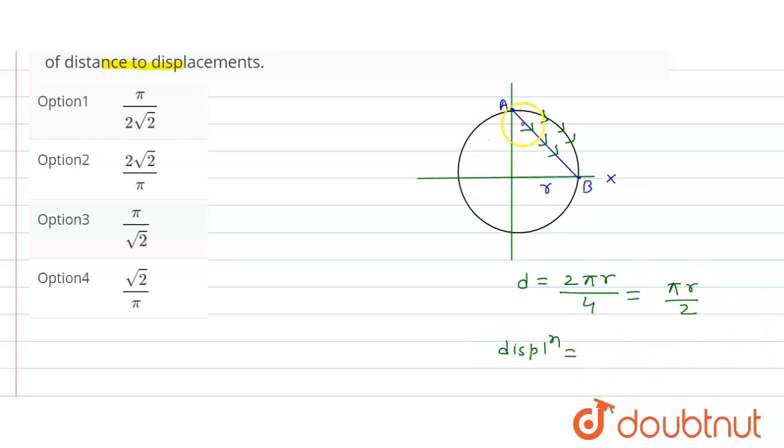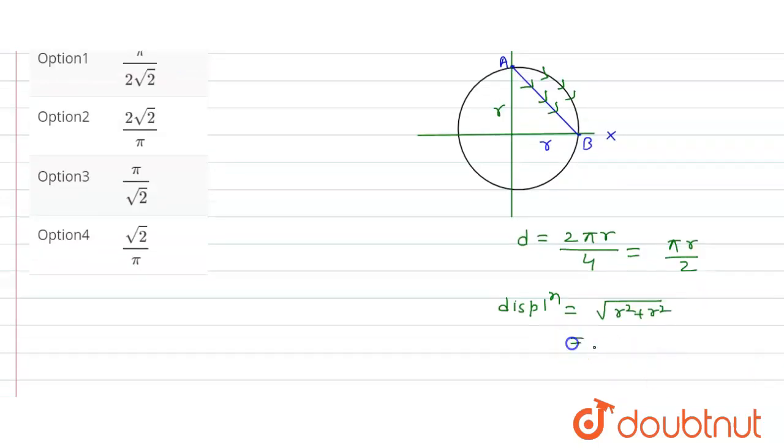Is equal to how much? This will be the displacement. So this is r and this is r, so this will be how much? r under root of r square plus r square.